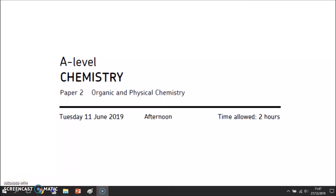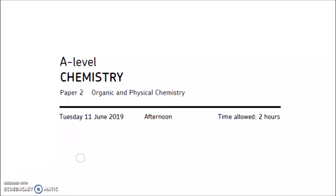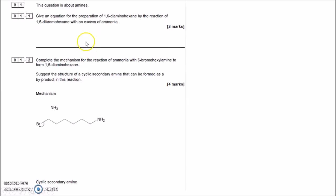A-level Paper 2, June 2019. This question is about amines. Remember, amines have N's in them. An NH₂ is a primary amine because the N is bonded to one carbon. An NH is a secondary amine where the N is bonded to two carbons, and there's just an N bonded to three carbons with no H's.